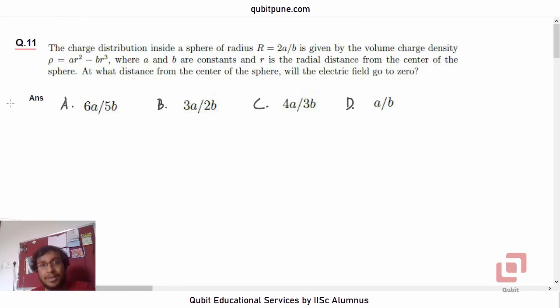Let's read the question. It is based on electrostatics. The charge distribution inside a sphere of radius R = 2a/b is given by volume charge density ρ = ar² - br³, where a and b are constants and r is the radial distance from the center of the sphere. At what distance from the center of the sphere will the electric field go to zero?